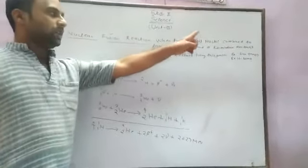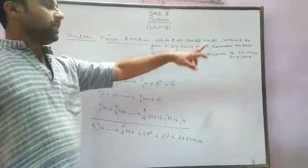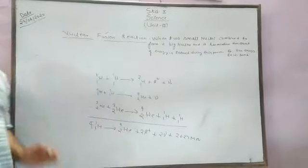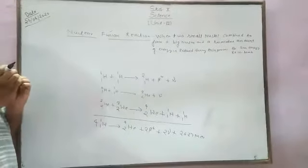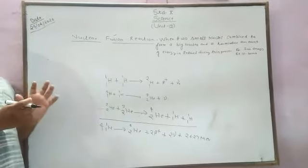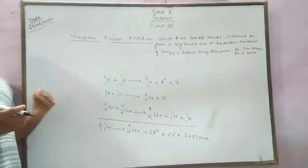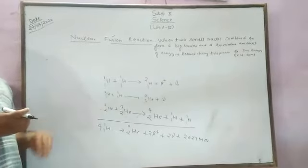When two smaller nuclei combine to form a big nucleus, a tremendous amount of energy is released during this process. It means when two smaller nuclei are combined together, they form a heavy, stable nucleus and release a tremendous amount of energy.